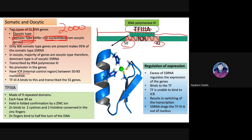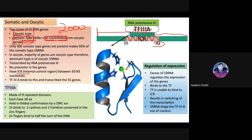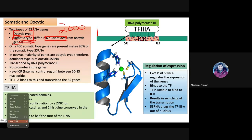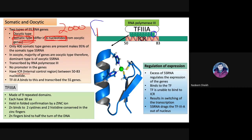Transcription Factor IIIA has specific structural characteristics. Looking at its structure, you can see 9 finger-like projections shown in green. These are called zinc fingers. The protein has 9 such fingers, and these fingers interact with DNA. Each finger interacts with half a turn of the DNA double helix.